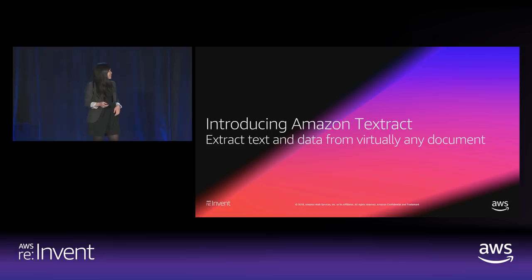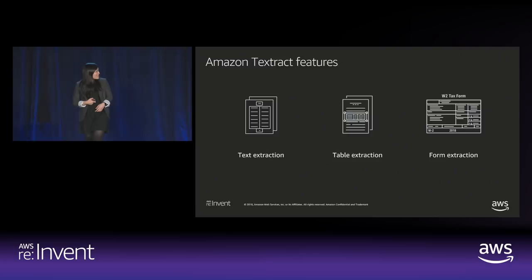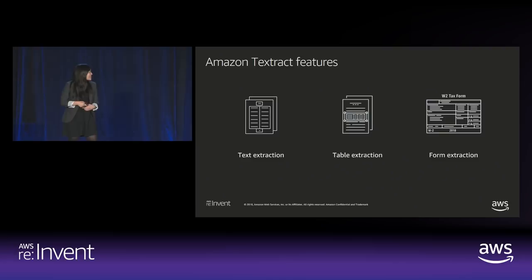As mentioned, we are launching text extraction — OCR plus plus — and we believe we've built a service that improves upon what classic OCR does. I'll walk you through some examples. With Amazon Textract, we also extend extraction capabilities to extract structured data in the form of tables as well as form elements.